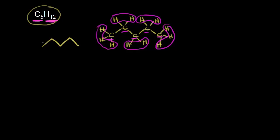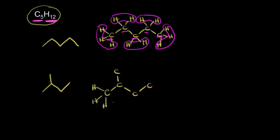Let's draw another structural isomer with the same molecular formula. Instead of drawing five carbons in a chain, now we draw four. We start with four carbons, and since we need a total of five, we show the fifth carbon branching off of our chain. Here are our five carbons. The carbon on the left has three hydrogens, three hydrogens on the top carbon, only one hydrogen on the central carbon, two hydrogens on the next one, and finally three hydrogens on the last carbon.